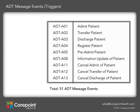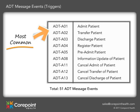There are 51 different types of ADT message events that represent real-world activities for the patient. Some of the most commonly used ADT message events are the A01 message when a patient is admitted, the A02 when they are transferred, and the A03 when they are discharged.